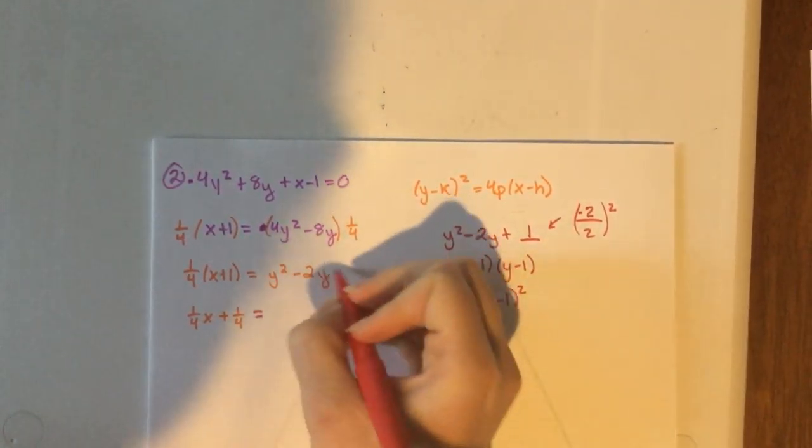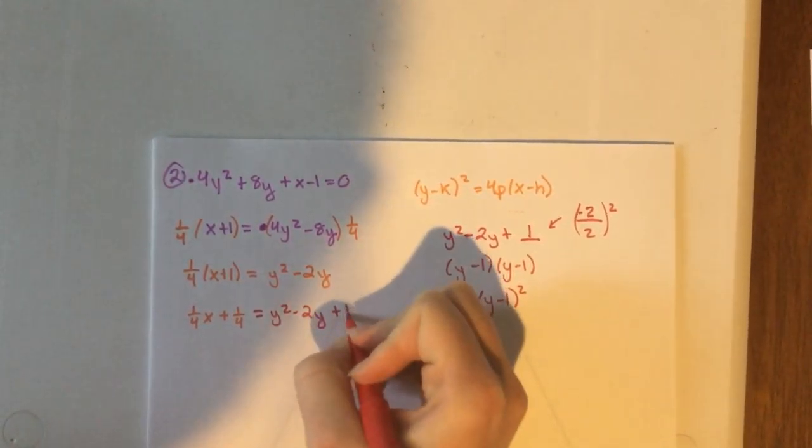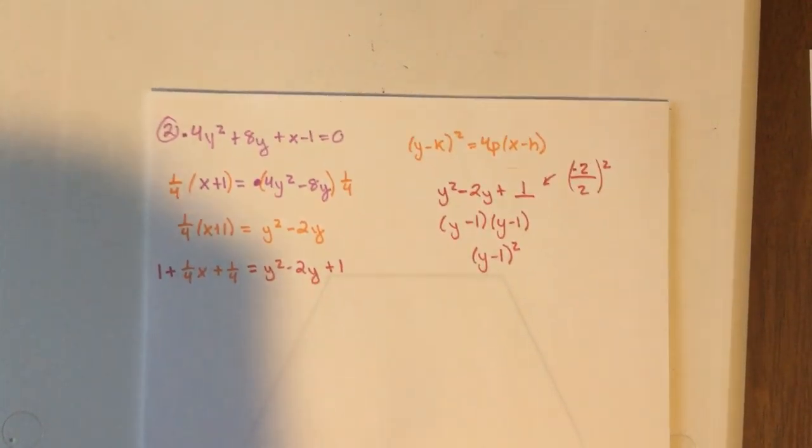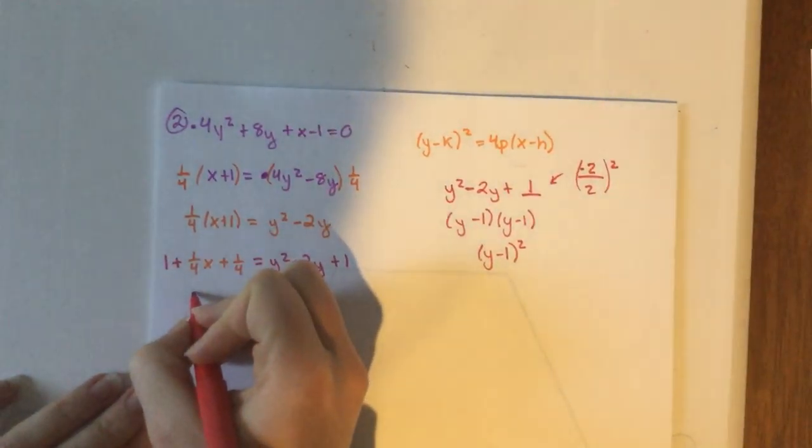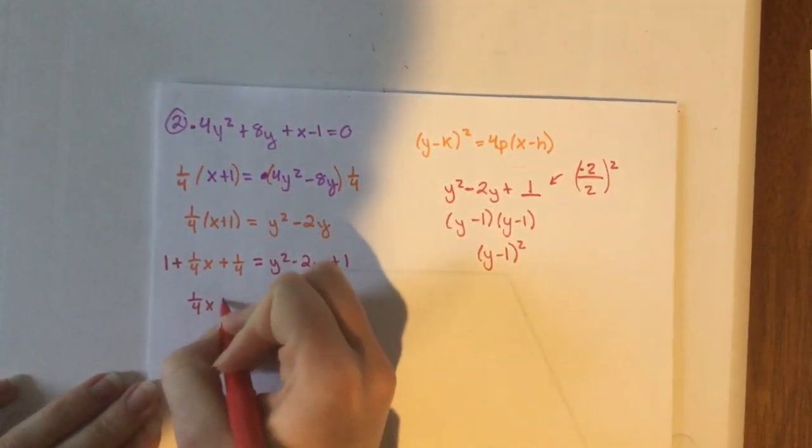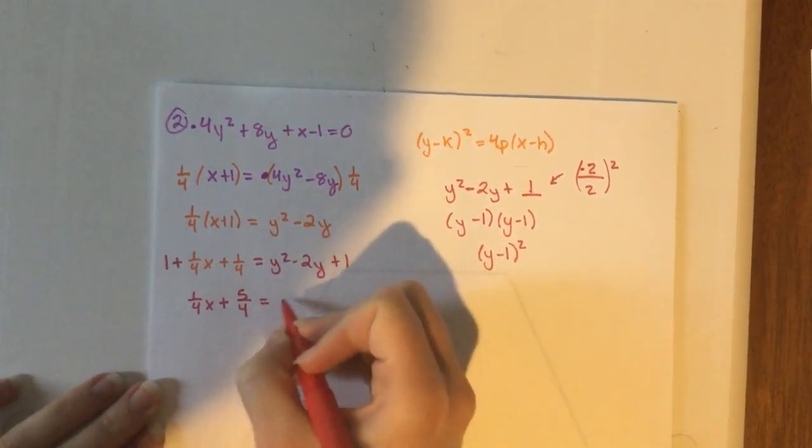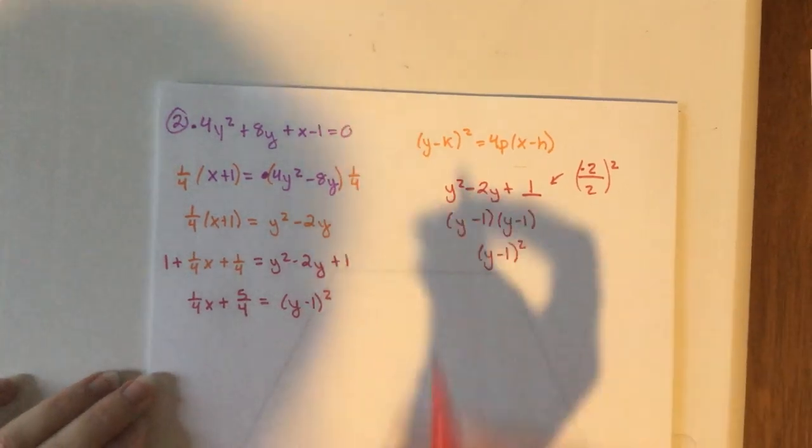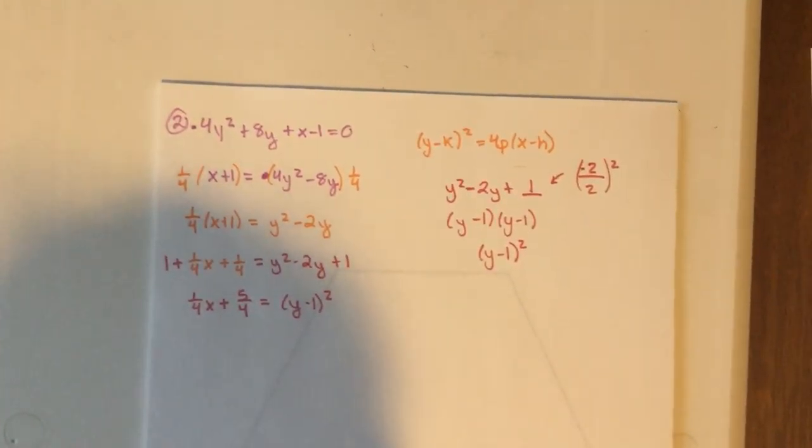So what we have over here is we're going to add a positive 1 to both sides. And if I add a positive 1, I get 1 fourth x plus, that's 5 fourths, equals (y - 1)².